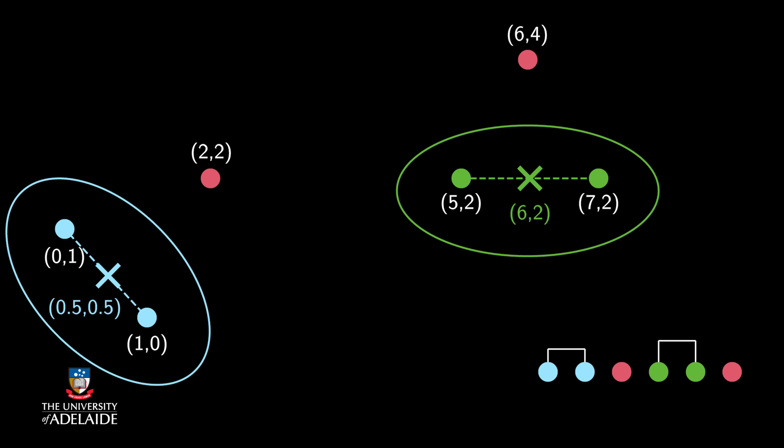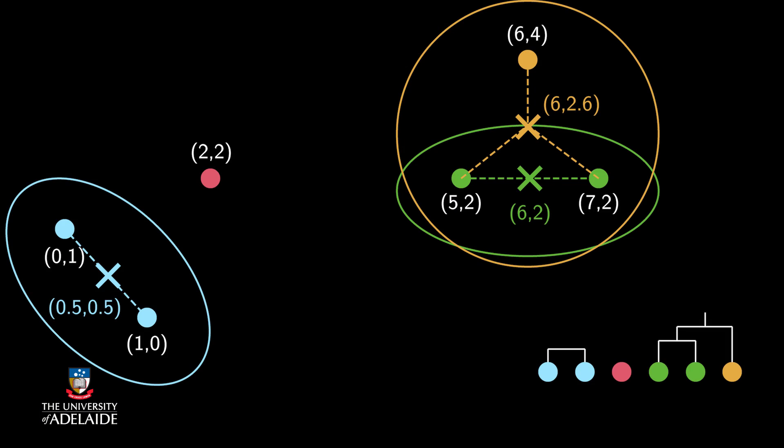The algorithm considers the distances between clusters again. And this time, it chooses (6,2) and (6,4). It's important to note that the new centroid is the average of the points in the cluster, not the average of the centroids. So I consider all three points within the cluster when calculating the new centroid. The centroid of the orange cluster becomes (6, 2.46).